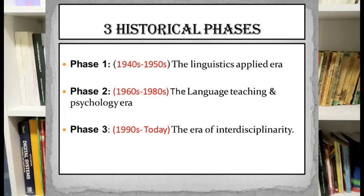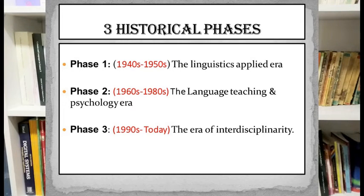In this short overview of the history of applied linguistics, three main phases can be identified. Phase one began from the 1940s to the 1950s, in which applied linguistics started as linguistics applied. The second phase, from the 1960s to the 1980s, saw applied linguistics focus on language teaching and learning and its relationship with psychology. The third phase began in the 1990s till now, in which applied linguistics became more interdisciplinary and started to cover more aspects of language-related problems alongside language teaching problems.